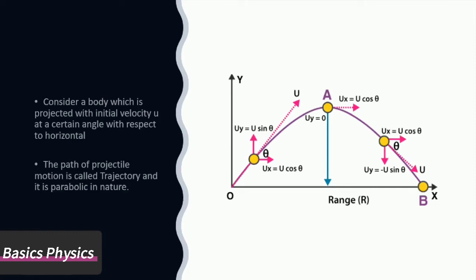During motion from O to A the vertical velocity component decreases and finally becomes zero at point A, and then again increases during motion from A to B. During the whole motion, horizontal component of velocity remains constant. The path followed by the projectile is called trajectory and it is parabolic in nature.